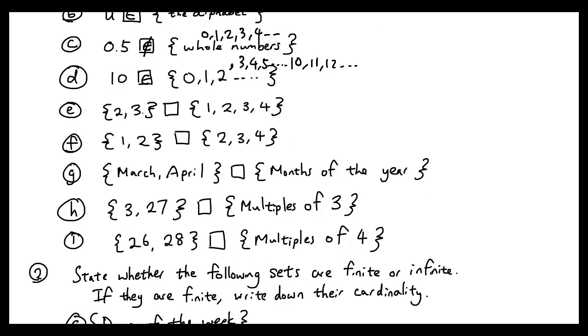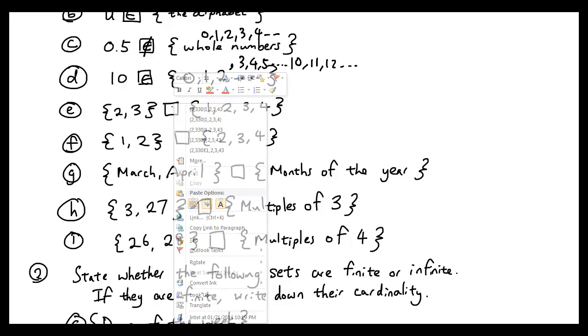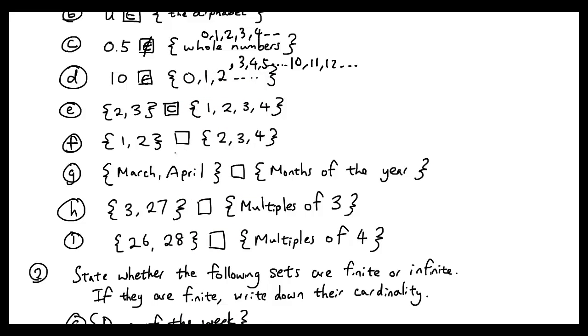Let's keep going. {2, 3}—well, we have a set already, and this set is a subset of this set. The reason is because 2 and 3, both of these elements, are in our bigger set. So I'm going to say it's a subset of. {1, 2}, however, is not a subset of this set because the element 1 is not in this second set. So therefore, I'm going to use the symbol 'is not a subset of.'